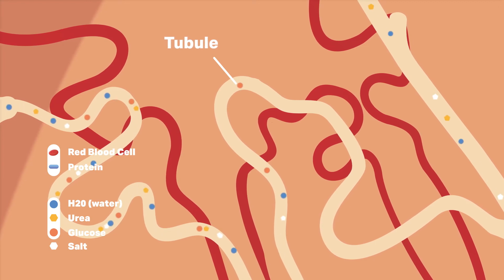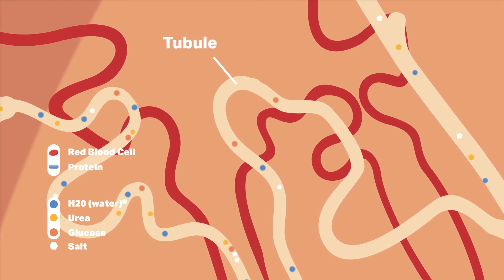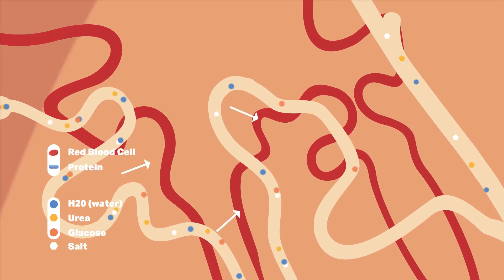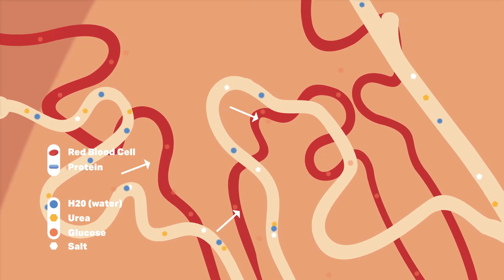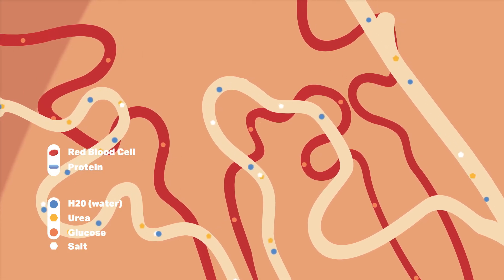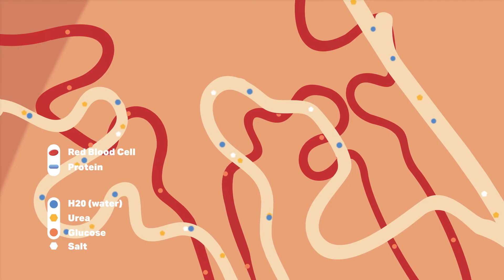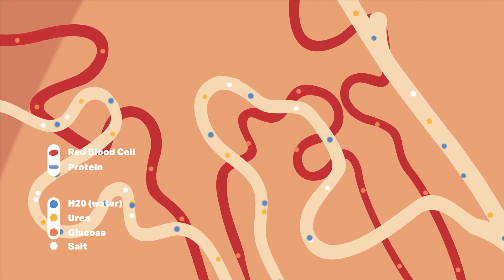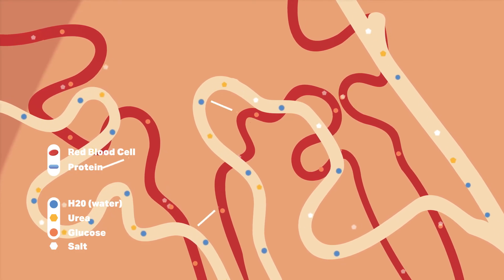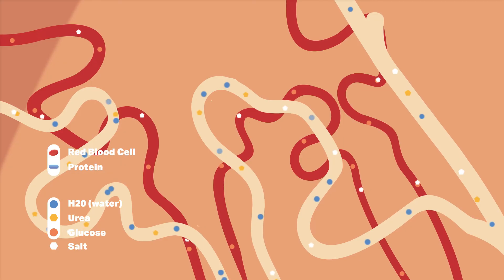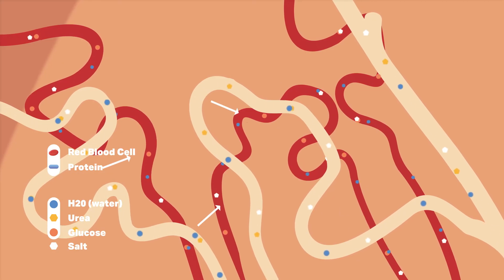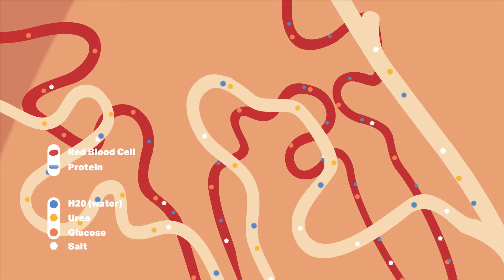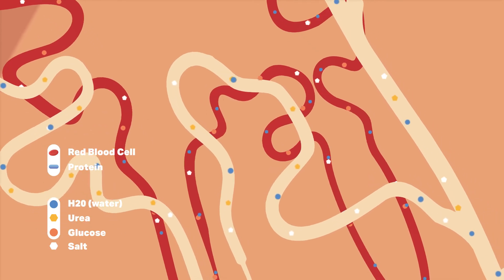As the liquid flows along the tubule, useful substances are reabsorbed. All the glucose is selectively reabsorbed, which means it is moved back into the blood against a concentration gradient. Sufficient salts are reabsorbed, and sufficient water is reabsorbed according to the level of the hormone ADH.